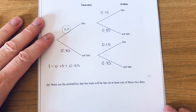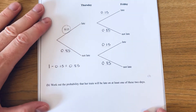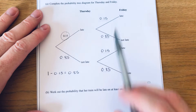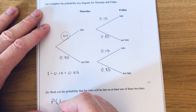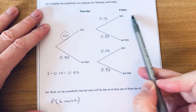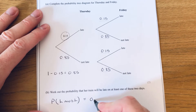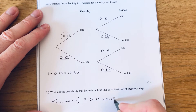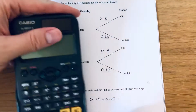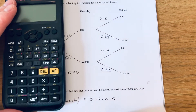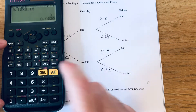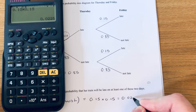Let's work out the probability that the train will be late on at least one of these two days. One possibility is that the train is late on both days. We multiply the top two probabilities together: 0.15 times 0.15. Putting this on the calculator gives 0.0225.